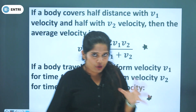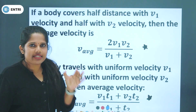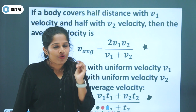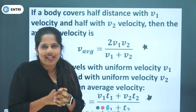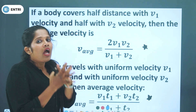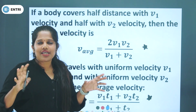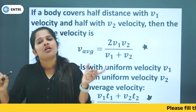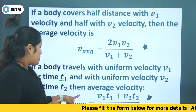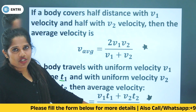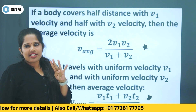Case 2: A body travels with uniform velocity v1 for time t1, then with velocity v2 for time t2. In this case, average velocity equals v1 times t1 plus v2 times t2, divided by t1 plus t2. These are the two special case formulas for average velocity.